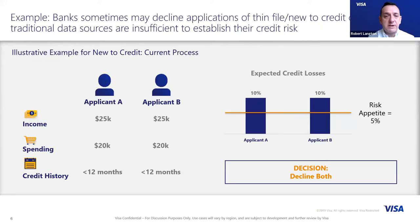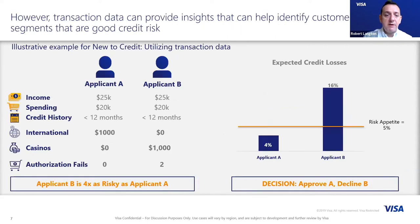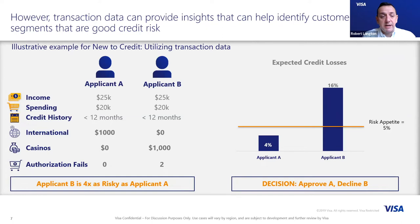When we started looking through the data, we saw a gap in the market around what we call thin-file or new-to-credit customers — those with limited credit history. Here's an example of two applicants that look fairly similar: both have the same income, same annual spend, and very limited credit history, so both would potentially be declined. However, when we linked Visa's transactional data, applicant A is far more suitable for credit — they spend on international travel, which research shows correlates to lower credit risk, with no gambling spend and no authorization fails.